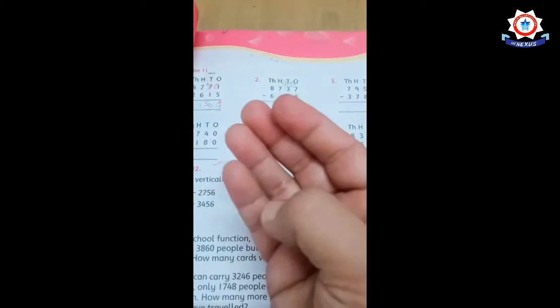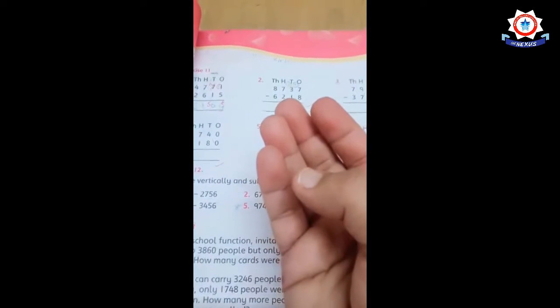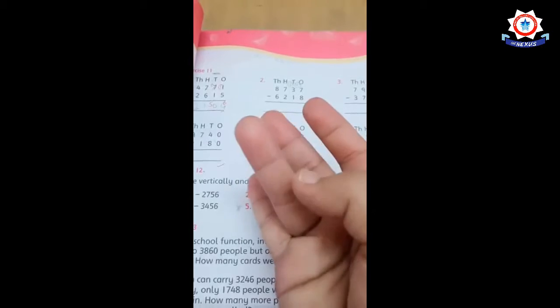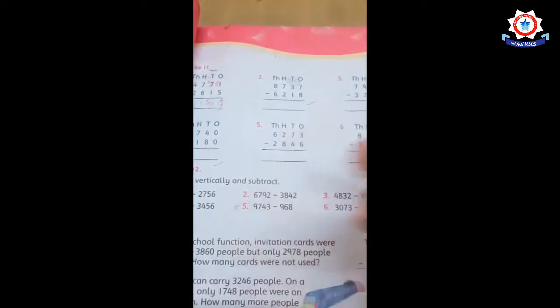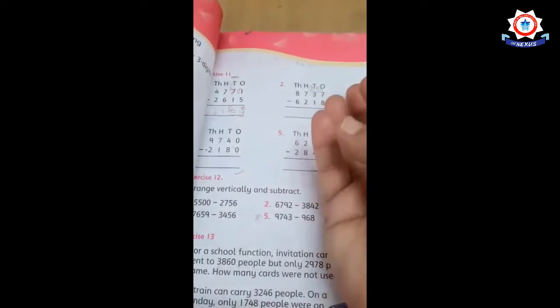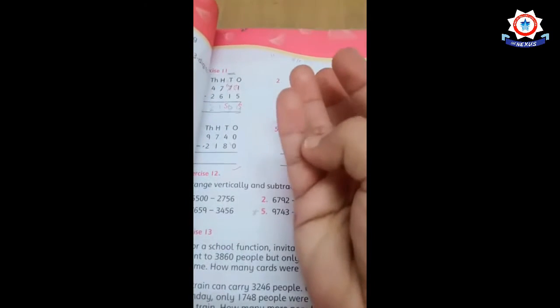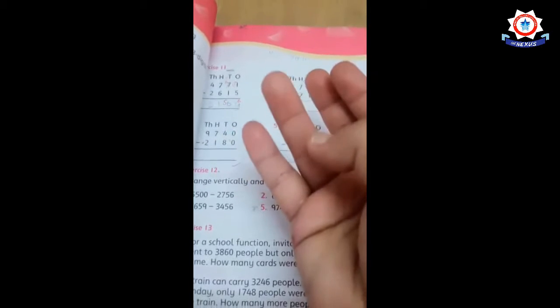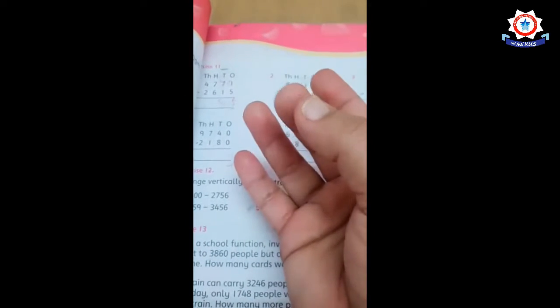you will count on your fingers, 16, 17. Two fingers will be used. If you have to subtract 8, you will count on your fingers: 1, 2, 3, 4, 5, 6, 7, 8.